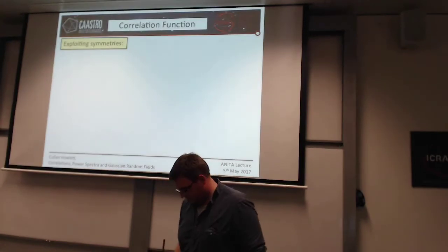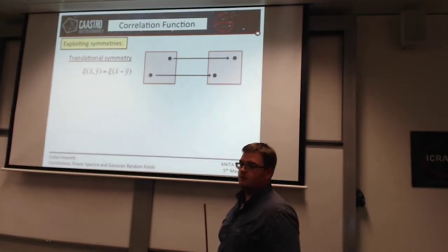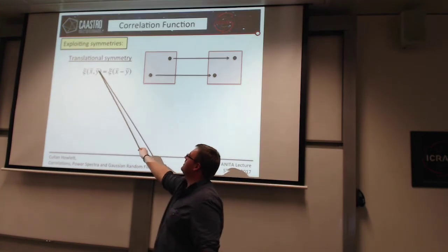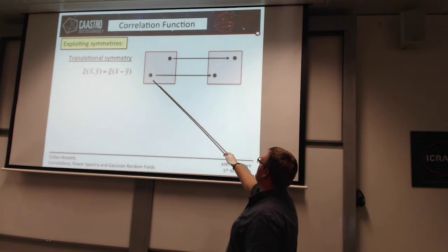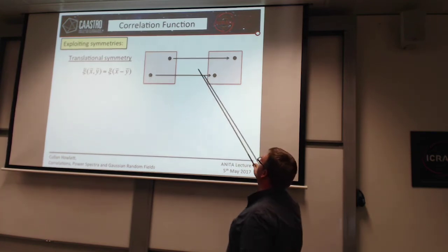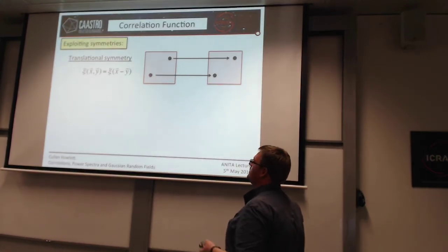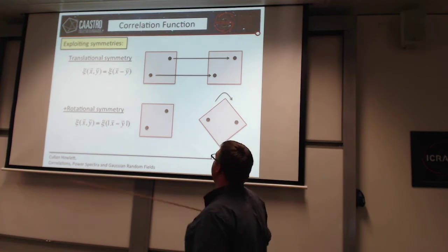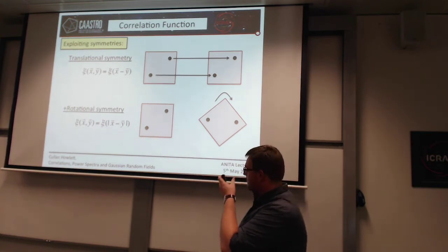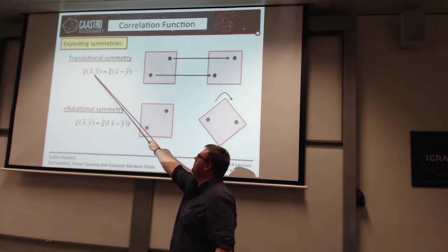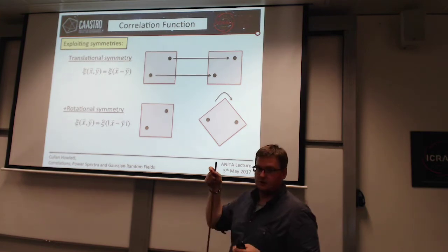There are a few symmetries in the correlation function which come in very useful. If our field has translational symmetry — meaning we can move it without changing its properties — then the correlation function depends only on the difference between two positions x and y, not on their individual positions. On top of that, if it's also got rotational symmetry, then all that really matters is the magnitude of the difference between the two positions, not the direction.